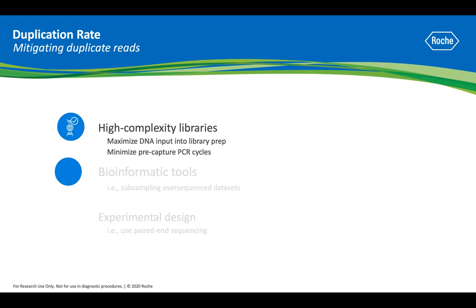Second, where possible, use the appropriate bioinformatic tools and methods to lower duplicate reads in the final data. For example, subsampling reads from over-sequenced data down to the desired read depth can rescue the decrease in data inaccuracy due to the duplicates, improving metrics such as coverage and allele frequency.